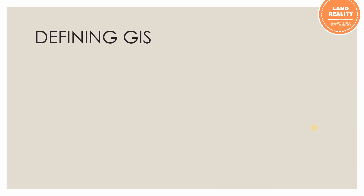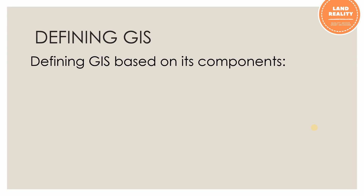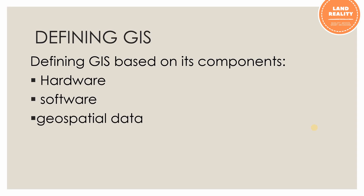We can also define GIS based on its components. The components of GIS include computer hardware, software, geospatial data, procedures, and people. This definition is very relevant because it gives a slot for people, and people are very instrumental in the development and use of GIS.